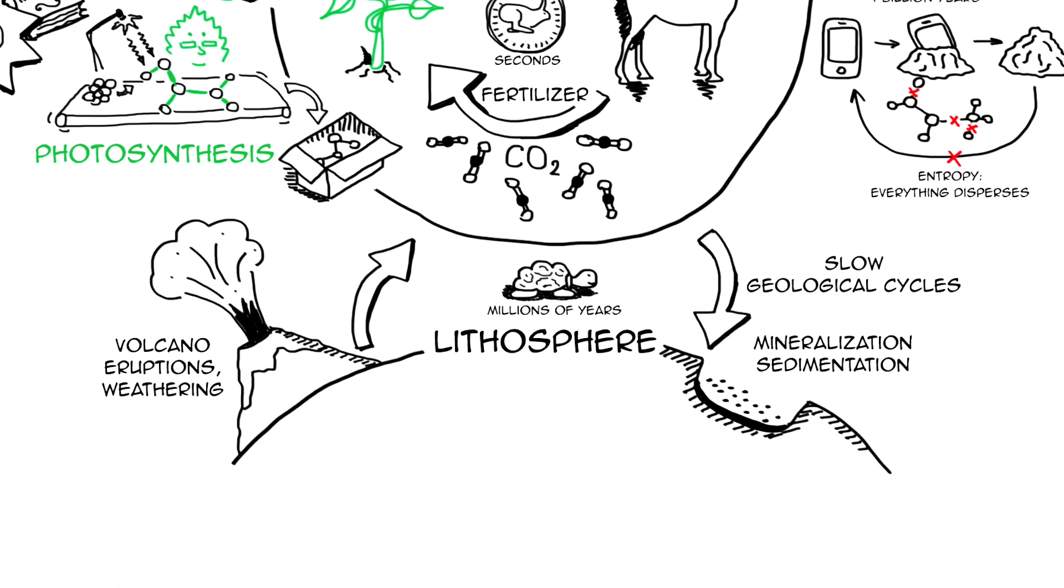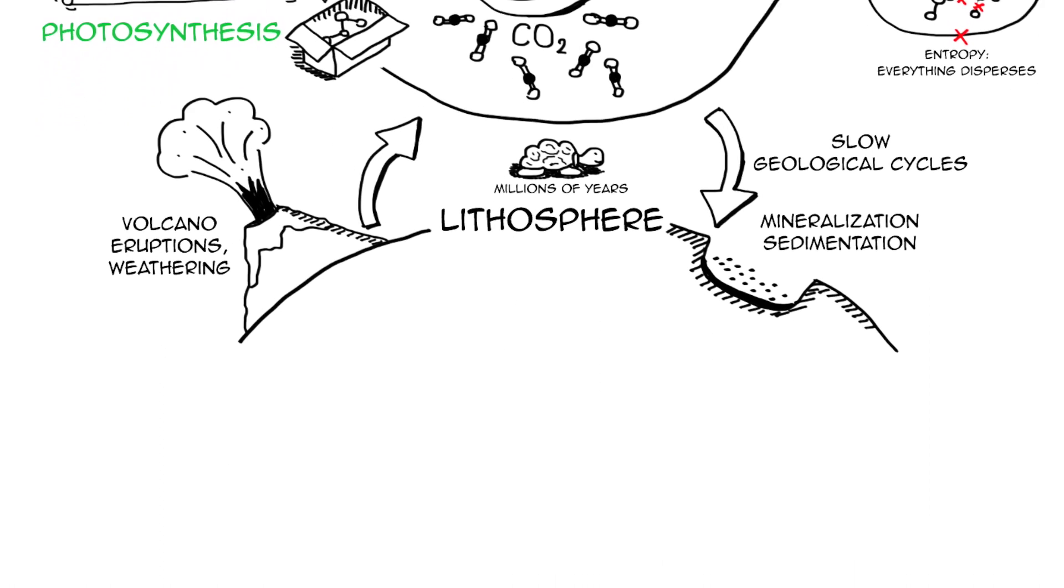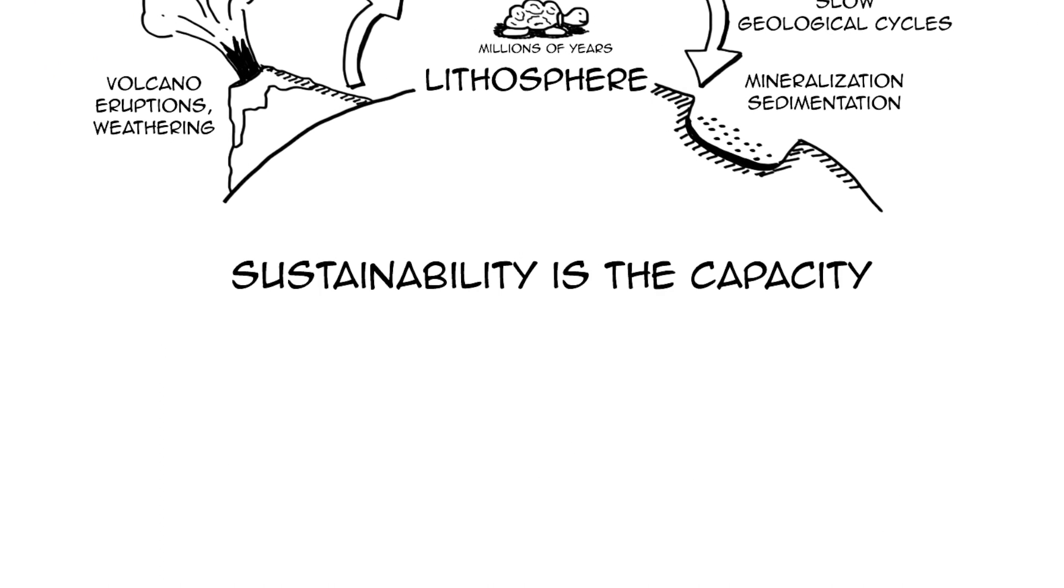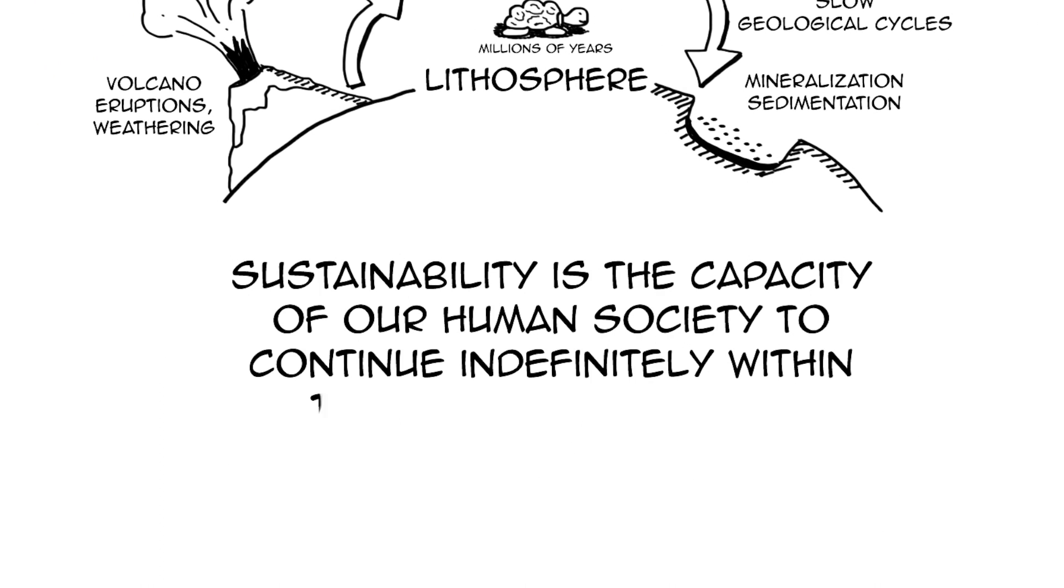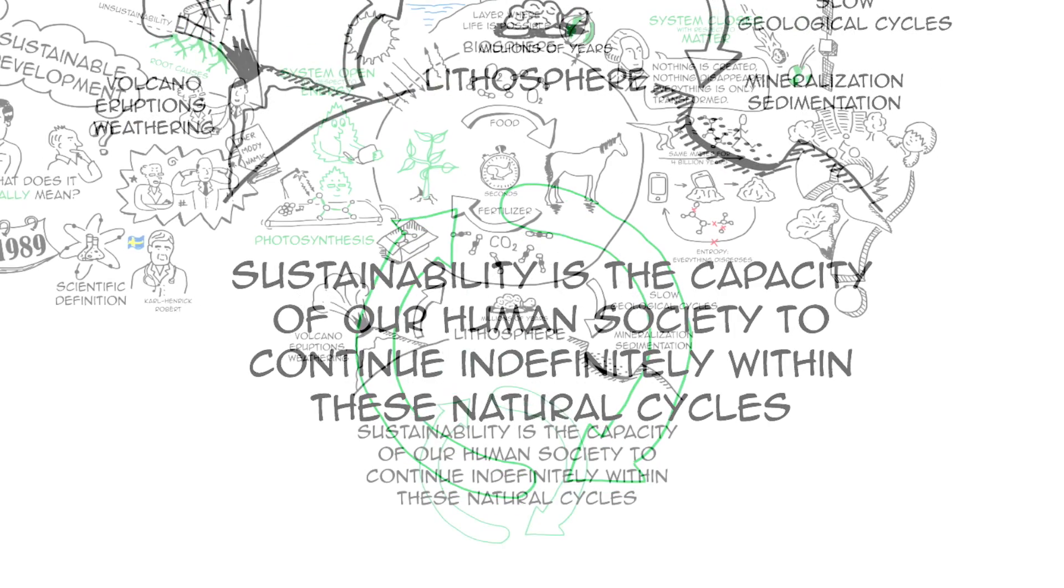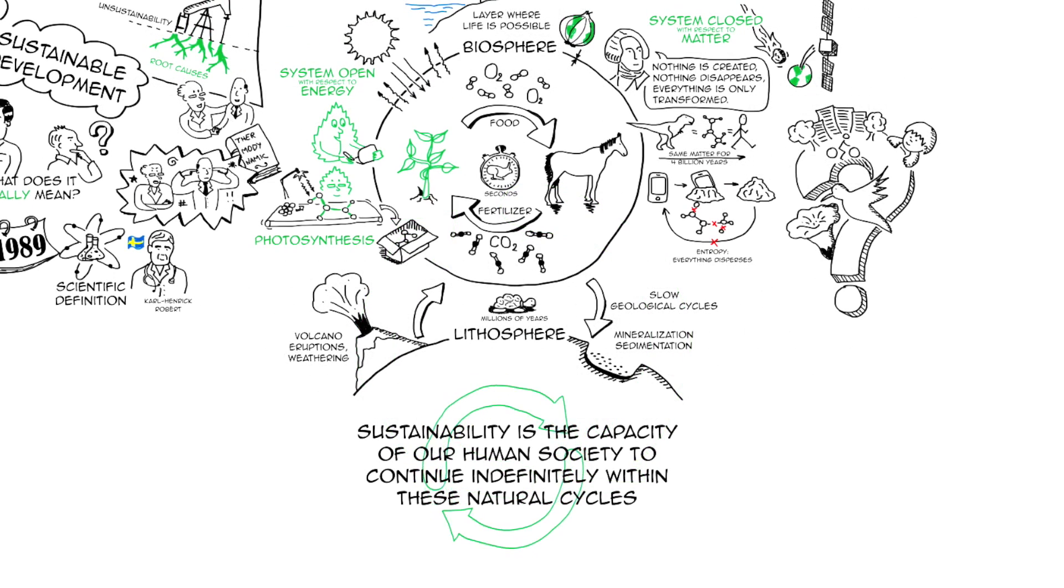So this is what the scientific community agreed upon. So this is the world we live in. And so we can ask the question, what is sustainability? Well, sustainability is actually the capacity of our human society to continue indefinitely within these natural cycles. And sustainable development would be a development towards this state of sustainability.